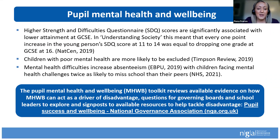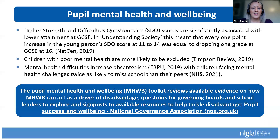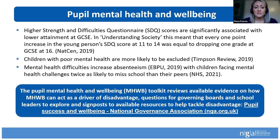Pupil mental health and wellbeing is also one of our pupil groups. The Strengths and Difficulties Questionnaire (SDQ) is a tool that schools use to measure mental health and wellbeing. In the 'Understanding Society' study, every one point increase in a young person's SDQ score at age 11 to 14 was equal to dropping one grade at GCSE at the age of 16. Children with poor mental health are more likely to be excluded, and mental health difficulties increase with absenteeism — children facing mental health challenges are twice as likely to miss school than their peers.